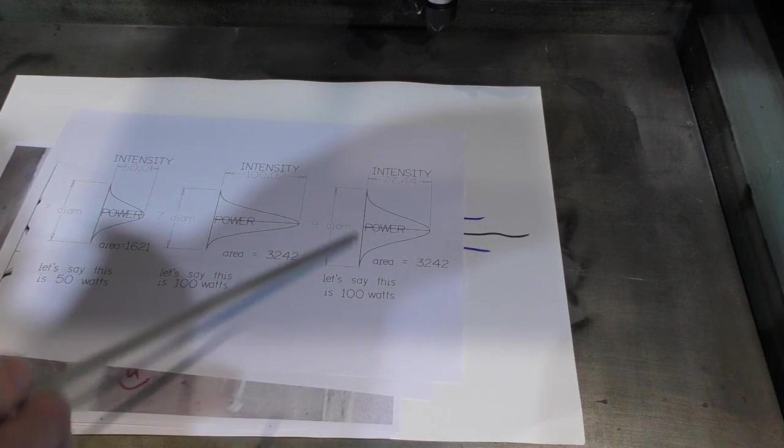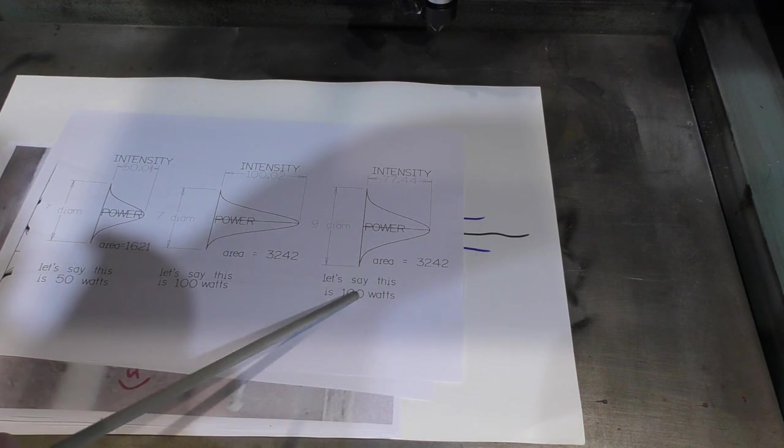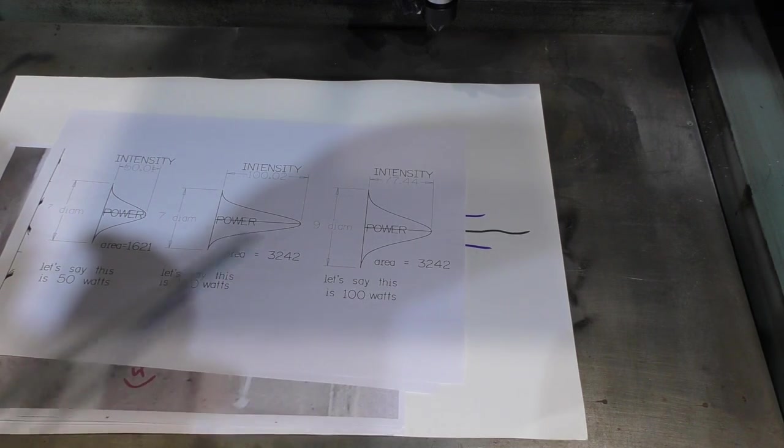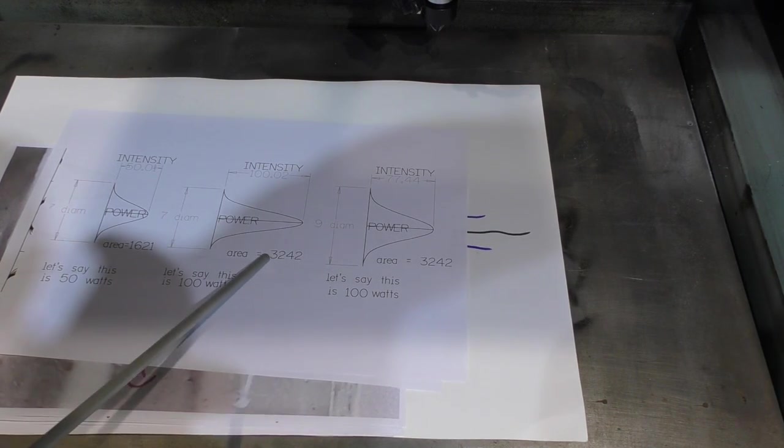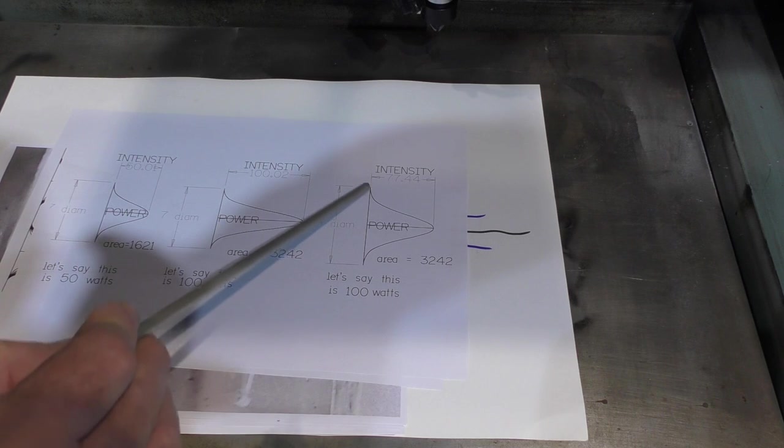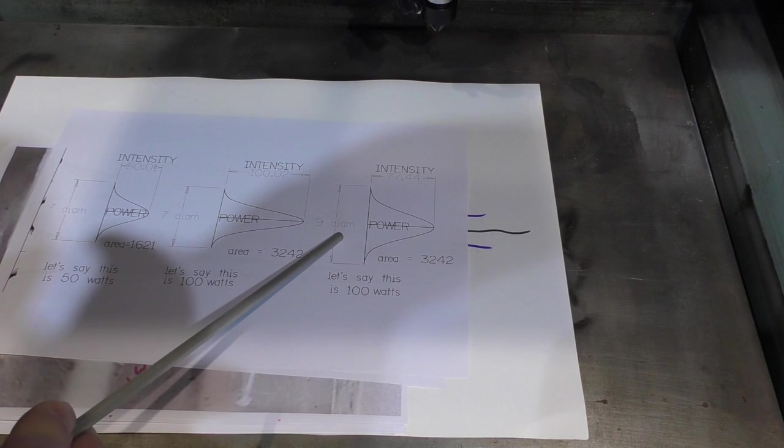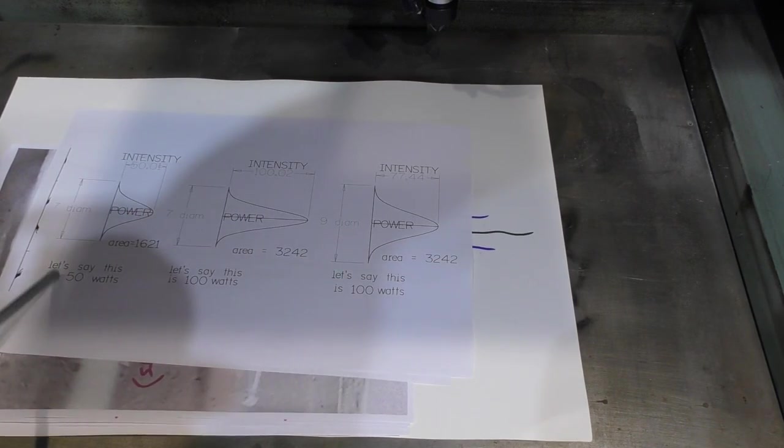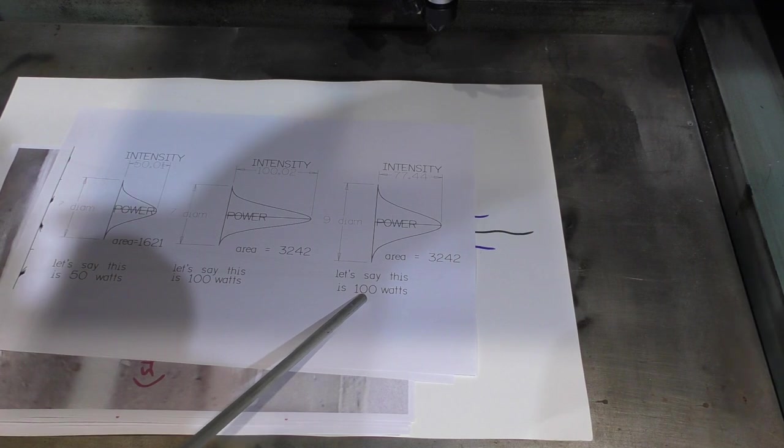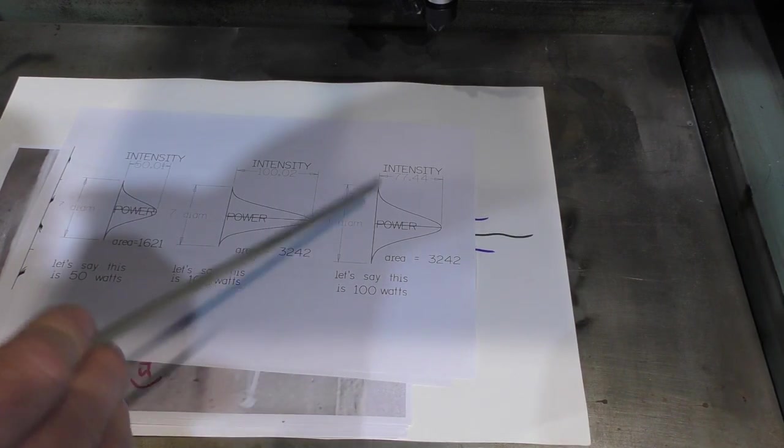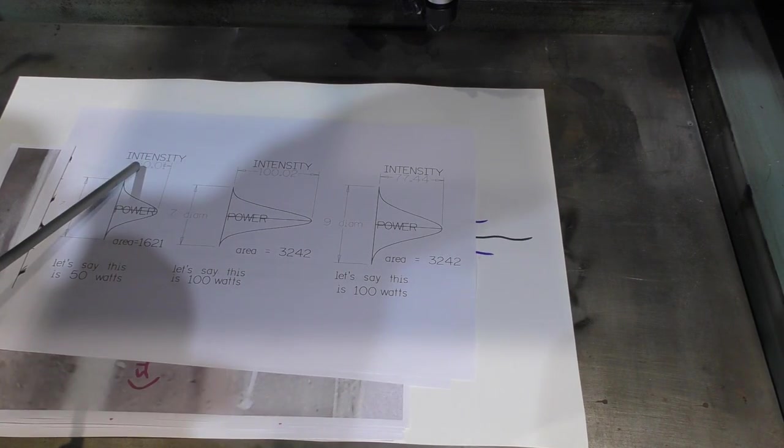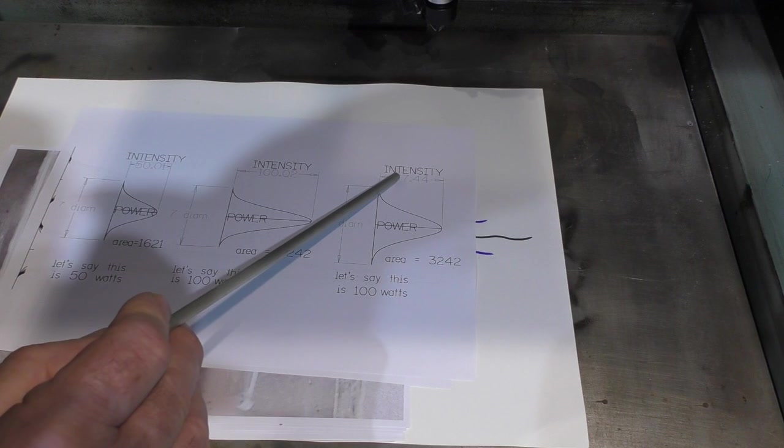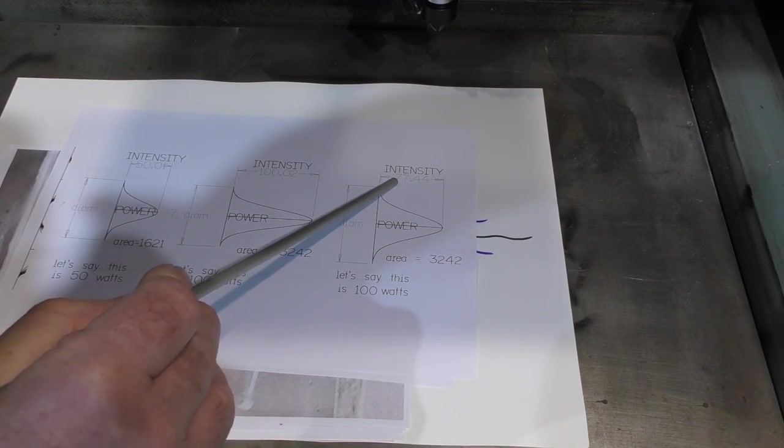So, this has grown from seven millimetres at 50 watts to nine millimetres at 100 watts. And what that's done, because I've pushed the base out, although I have increased the area from 1621 to 3242, the same as it is here, because I have changed the baseline, the diameter of the beam itself, look what's happened. Although I've doubled the power of my tube from 50 to 100, I haven't doubled its cutting efficiency. The cutting efficiency is dependent upon its peak intensity, and the intensity has only grown from 50 to 77, a gain of 50%.